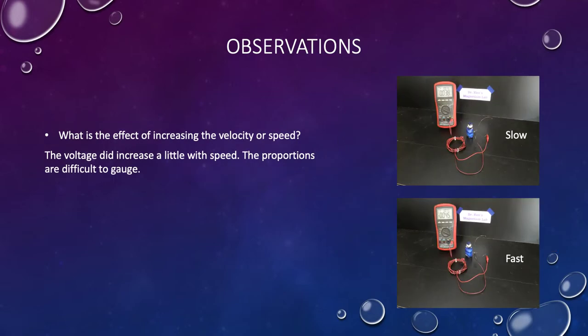Then what is the effect of increasing the velocity and speed? So if we went slowly, you can see here we've got about 38 millivolts. Went a bit faster, we got it up to about 45. So it was pretty hard actually to catch the difference but eventually I got there. Slow movement - unfortunately it's hard to predict, you know, I couldn't measure how quickly I was moving the things. So we can say the effect of increasing the velocity or the speed: the voltage did increase a little with speed and the proportion is difficult to gauge.